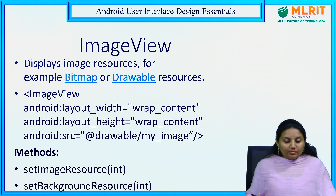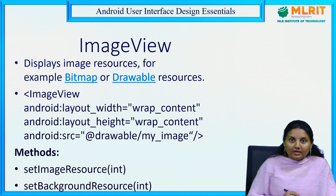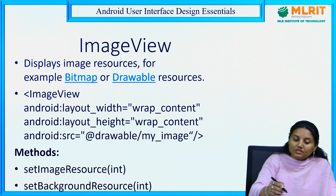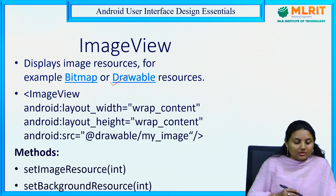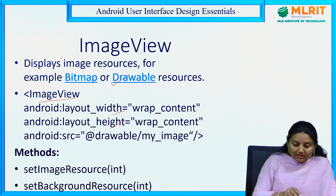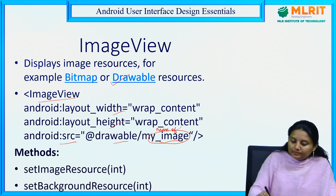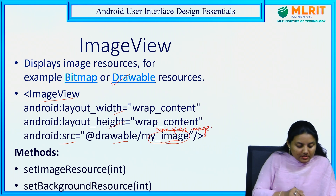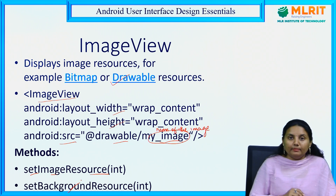Image view displays resources — that means bitmap or drawable. We are talking about image resources. Whatever images you want to display, all these can be kept in the drawable folder as drawable resources. For getting image view we use the ImageView tag; for image button we use ImageButton. If you simply want to display an image, use ImageView with layout_width, height, and source as @drawable/myimage, where myimage is the name of your image. The methods are setImageResource() to set an image, and setBackgroundResource() if you want to set a background.